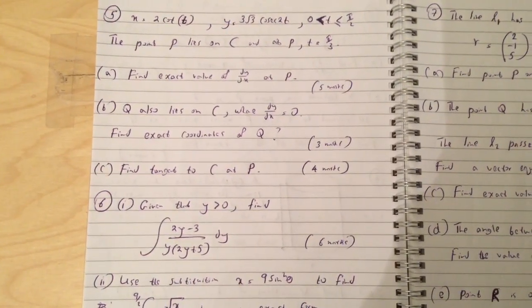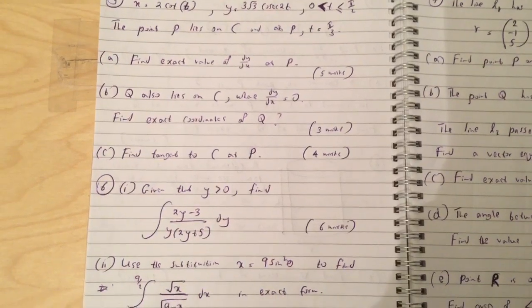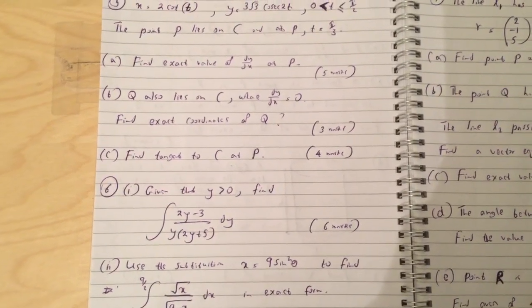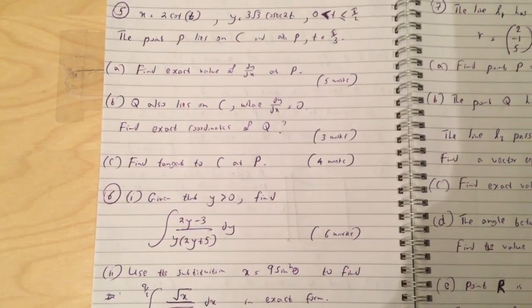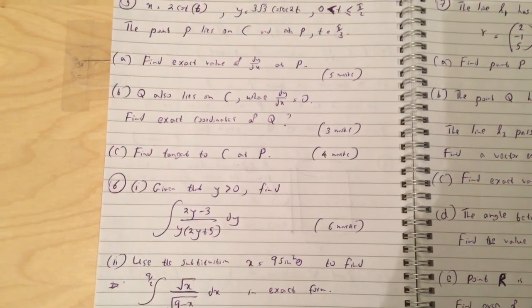Question B: Q also lies on C where dy dx equals 0. Find exact coordinates of Q. Question C: Find tangent to C at P.